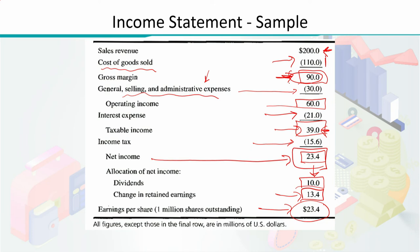This is how we construct the income statement for any firm. We start with overall sales revenue, subtract to get gross margin, deduct all administrative expenses to get operating income, then deduct interest payments to get taxable income, apply the applicable tax, and the remaining income is the net income. From net income, allocation is made between retained earnings and dividends paid to shareholders.